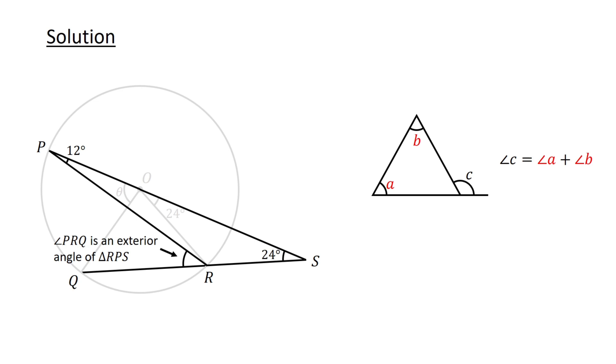The interior opposite angles are this angle and this angle. Thus angle PRQ equals 12 degrees plus 24 degrees or 36 degrees.